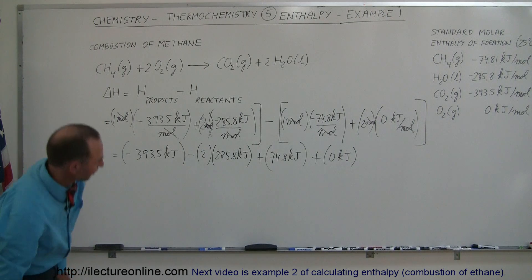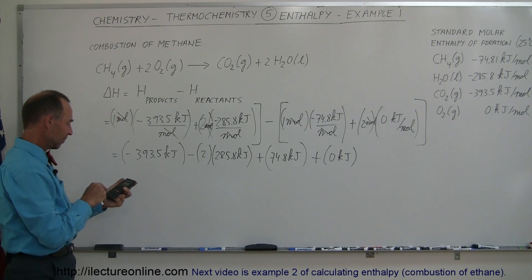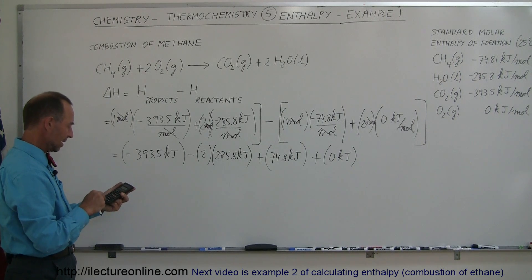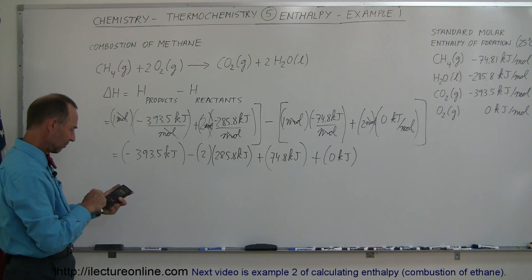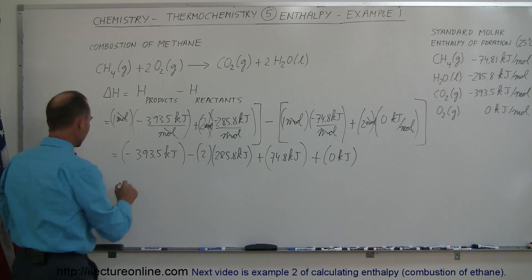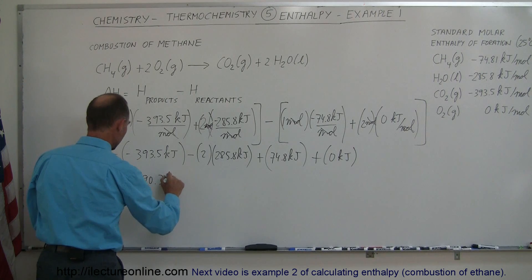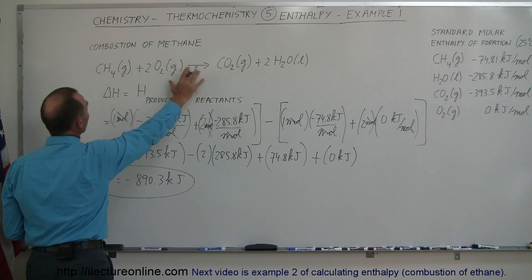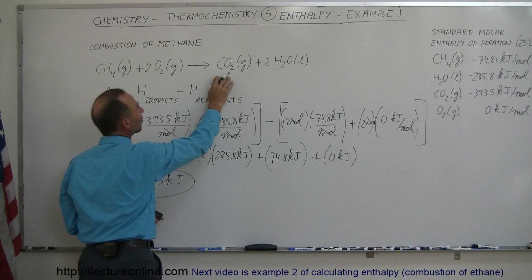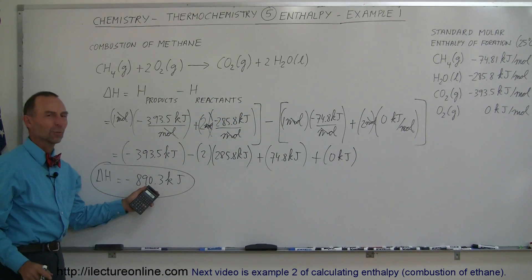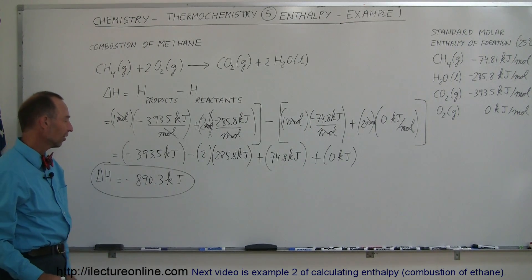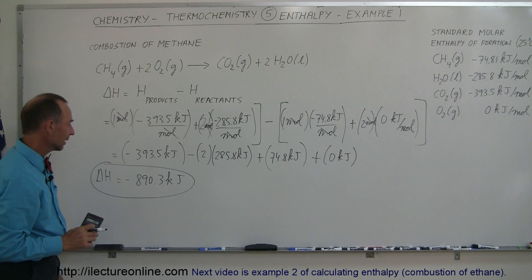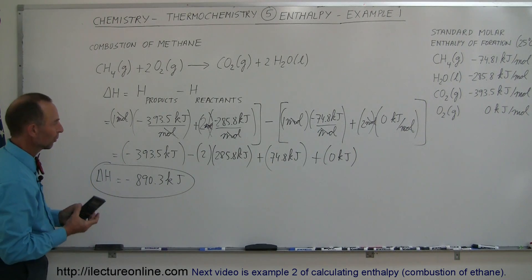And now we need a calculator. So 393.5, it's minus, and then minus 2 times 285.8, and then we add to that plus 74.8 equals, and we get minus 890.3 kilojoules. That would be the total enthalpy change for this reaction if we had one mole of methane, two moles of oxygen, one mole of carbon dioxide, and two moles of water. Notice we're off by one number in the first decimal place compared to the previous video, but that's probably just because of roundoff errors, and we're not going to worry about that.